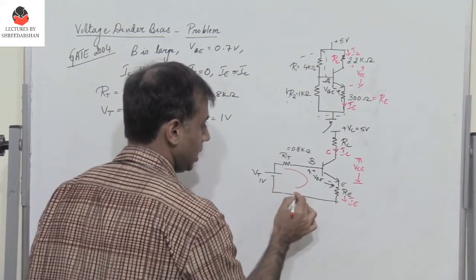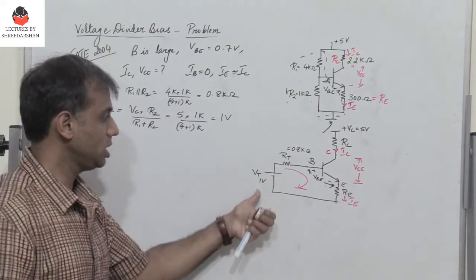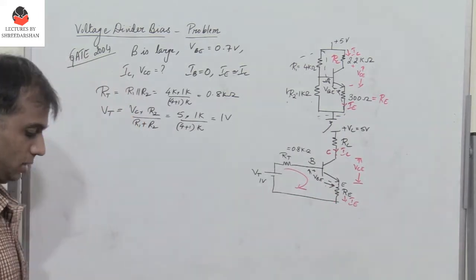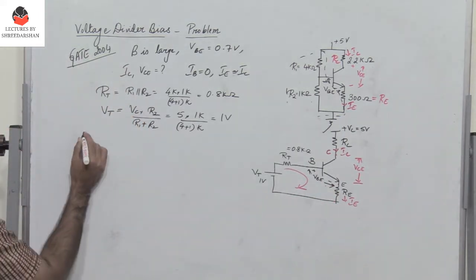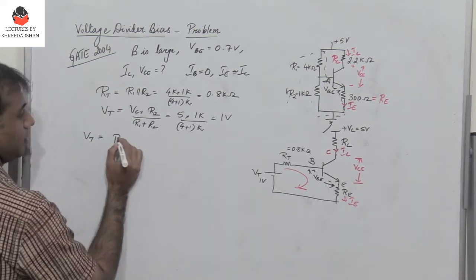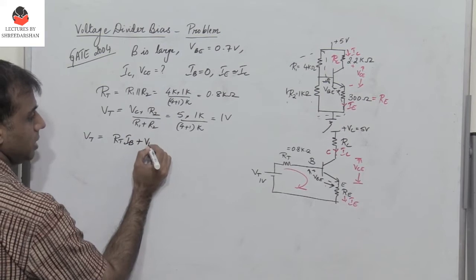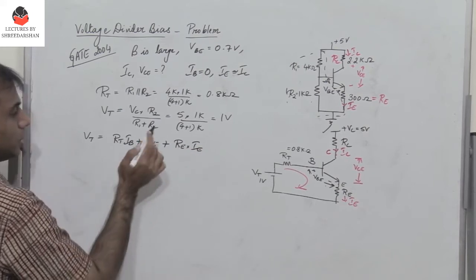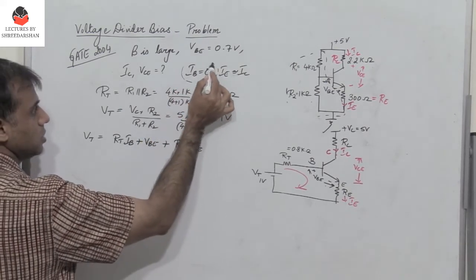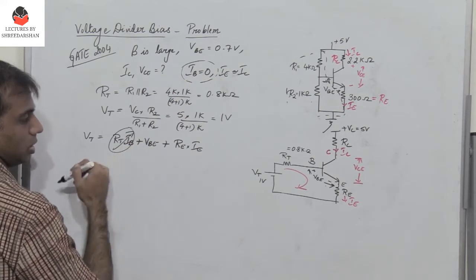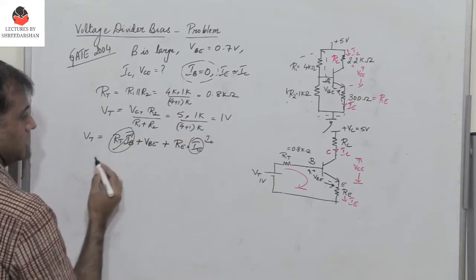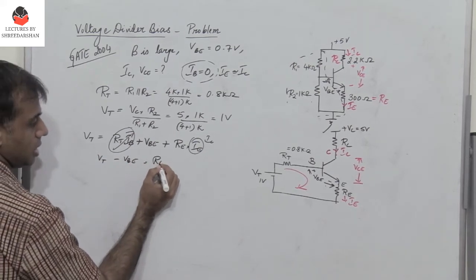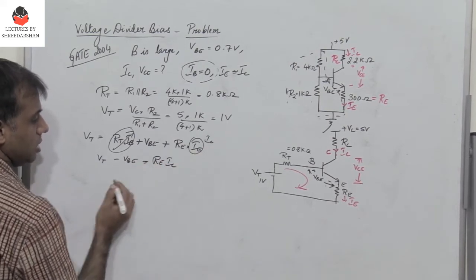Now let me apply KVL. The voltage Vt is equal to drop across Rt plus Vbe plus drop across Re. So Vt equals Rt into Ib plus Vbe plus Re into Ie. But we have assumed that Ib is 0, so this is 0 here. And this is nothing but Ic. Therefore, Vt minus Vbe equals Re into Ic, because Ie equals Ic.